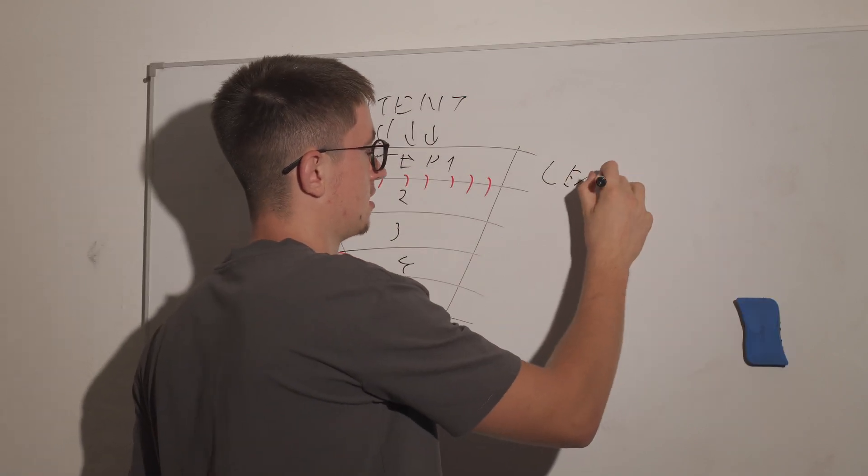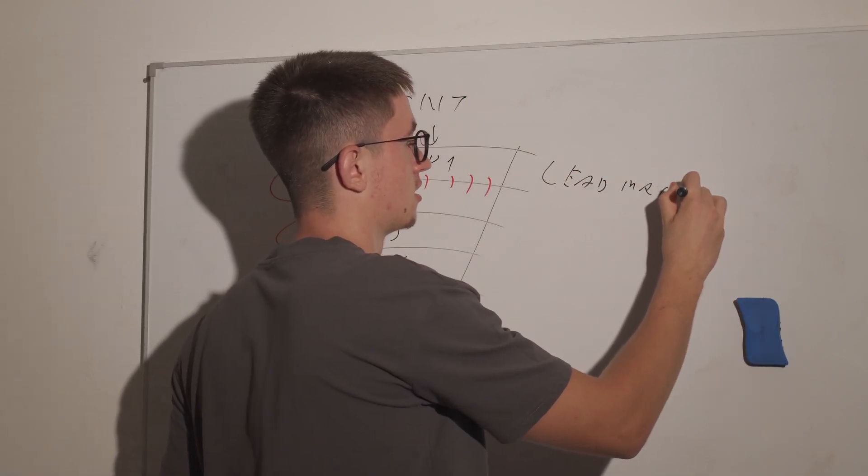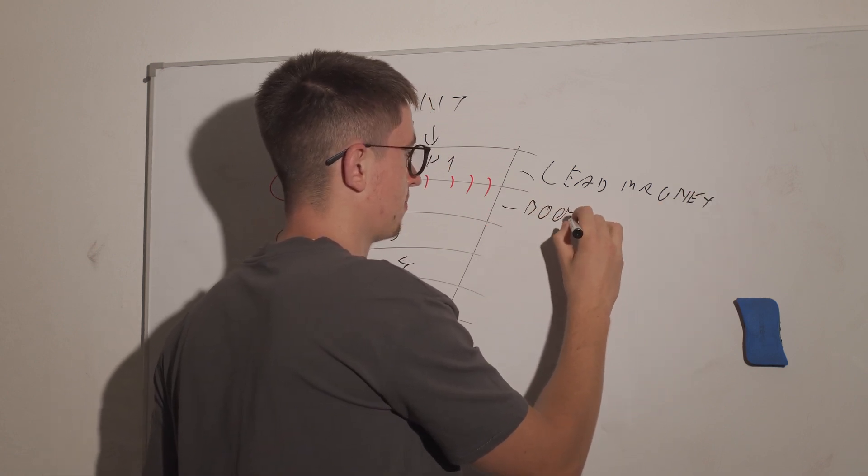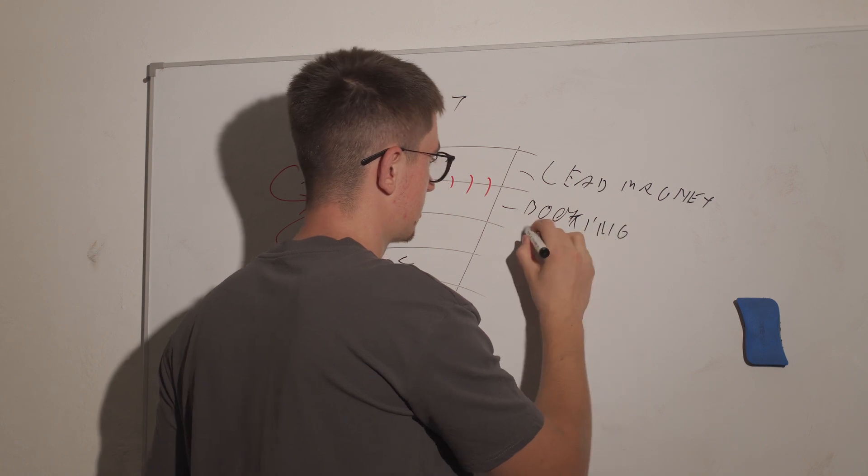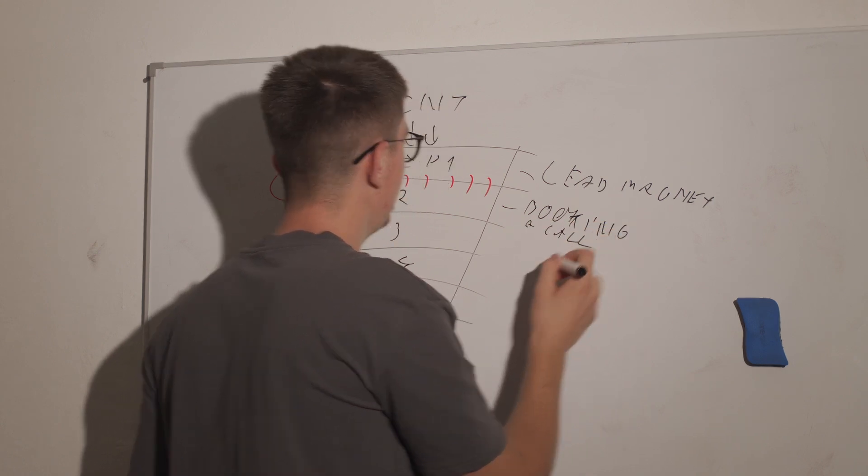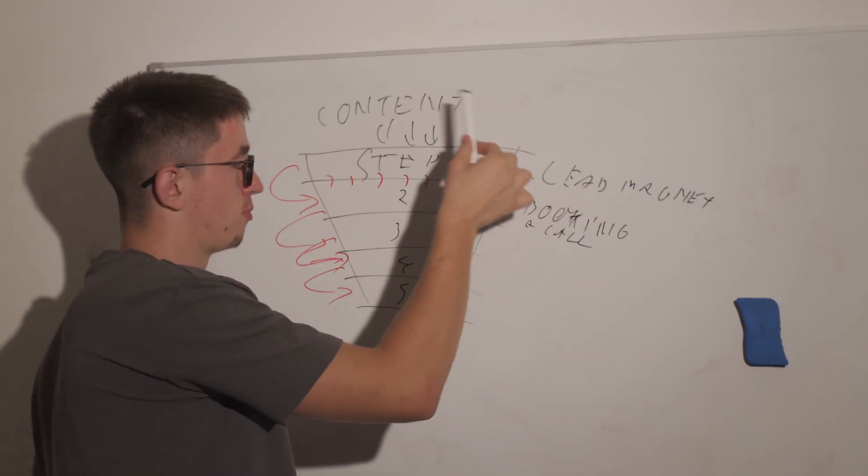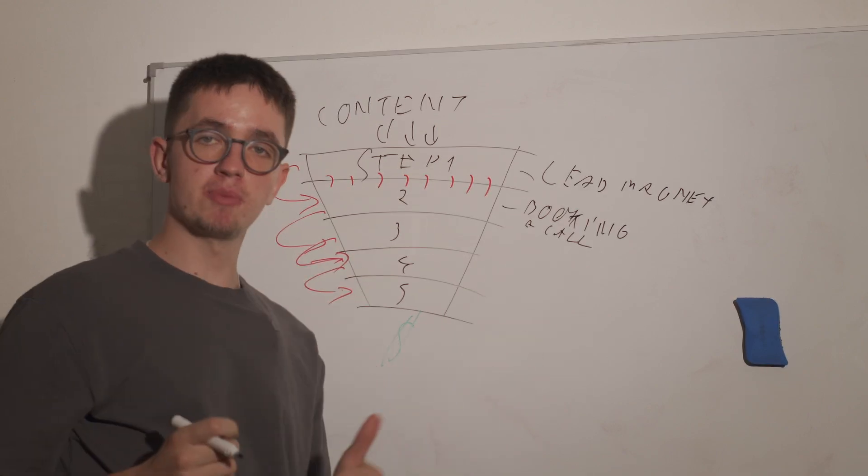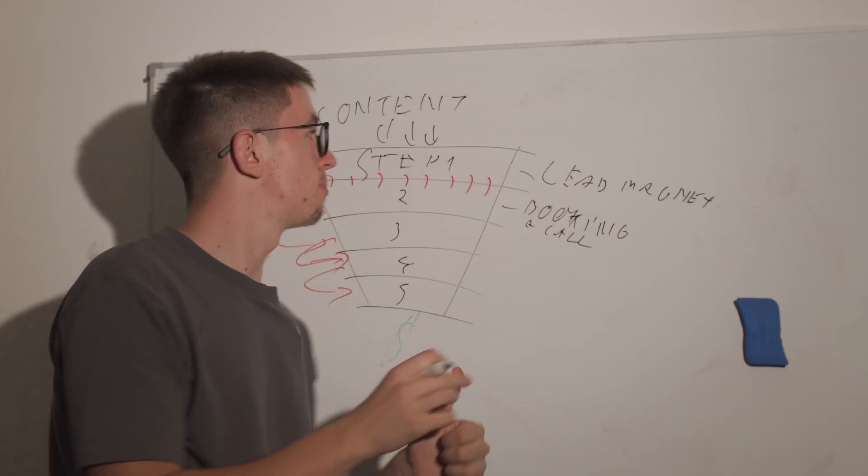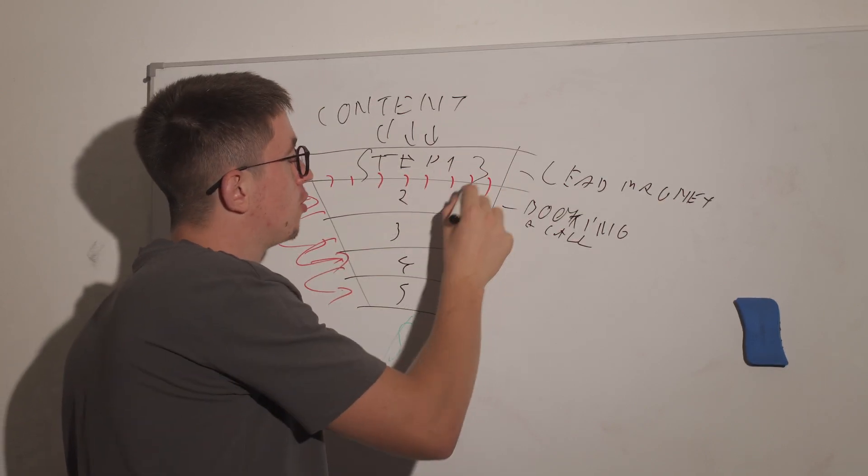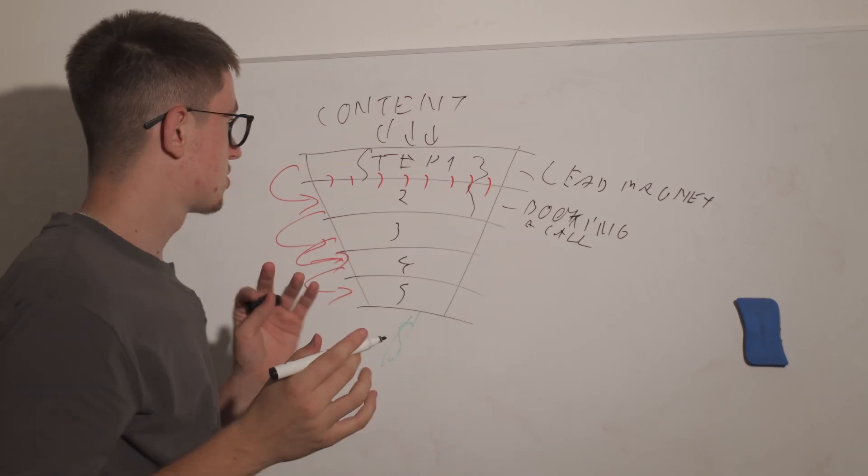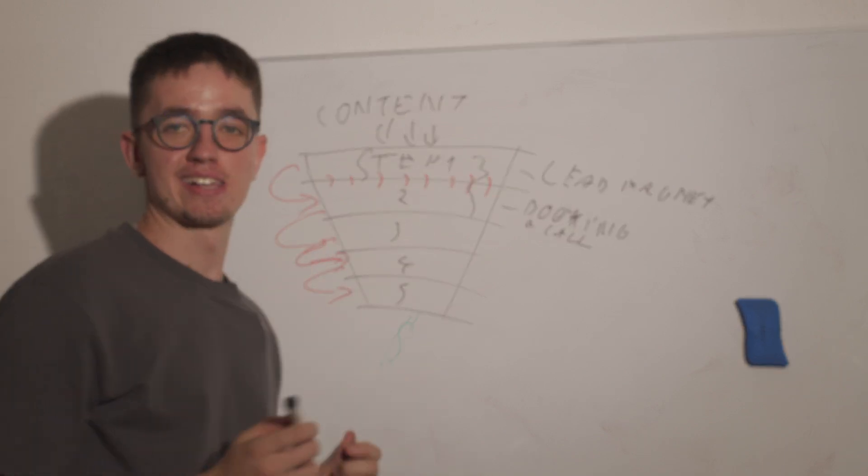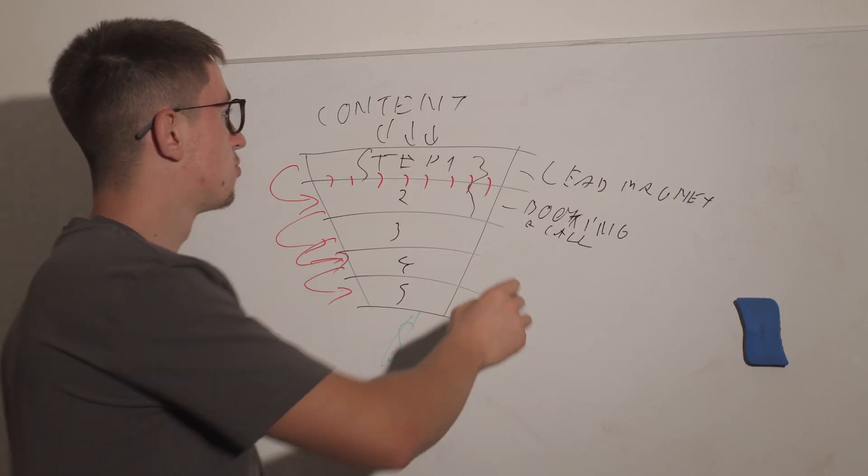It's really easy to understand because let's say there are two steps. This step is a lead magnet and this step is booking a call. The question is why would your lead go from step one to step two? What is the reason? And how do you have to make sure that it's really easy that the person can really just flow through that step?